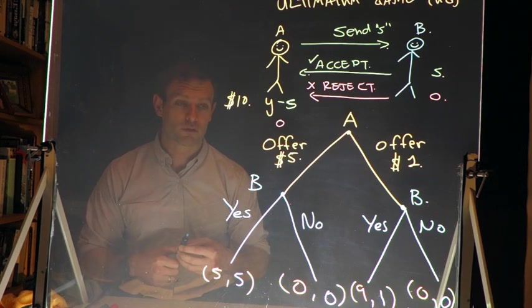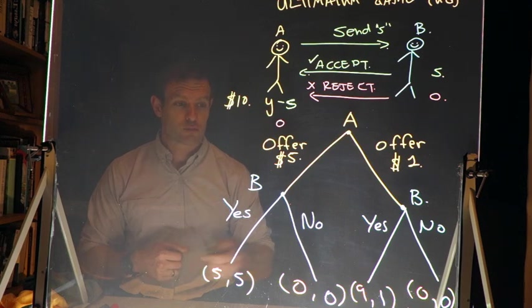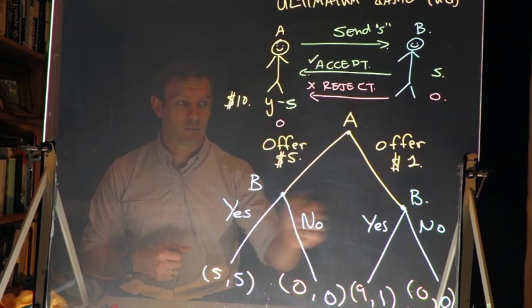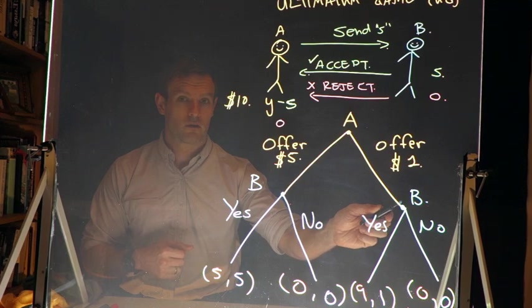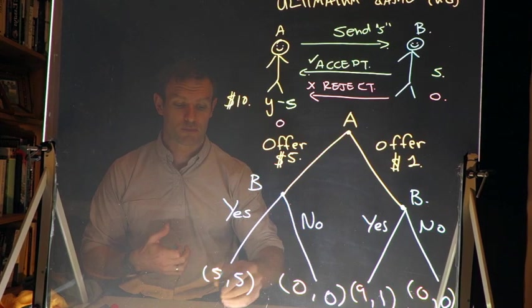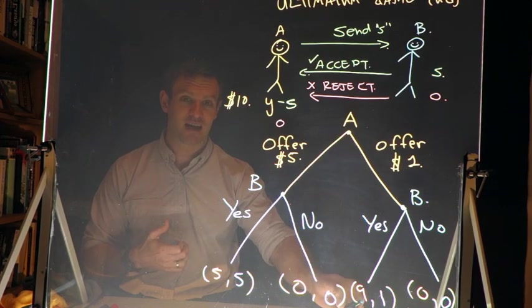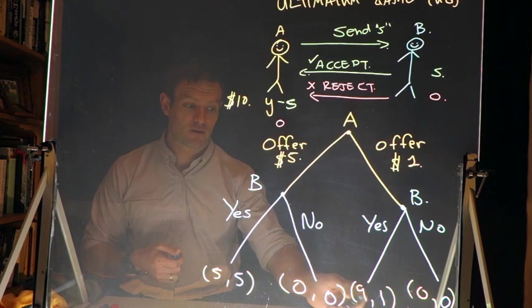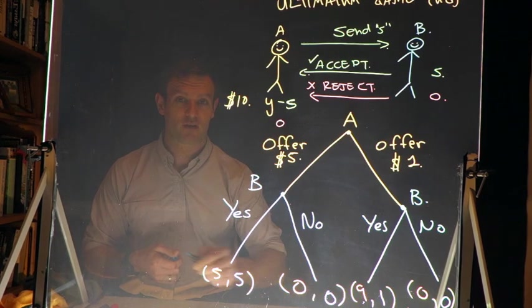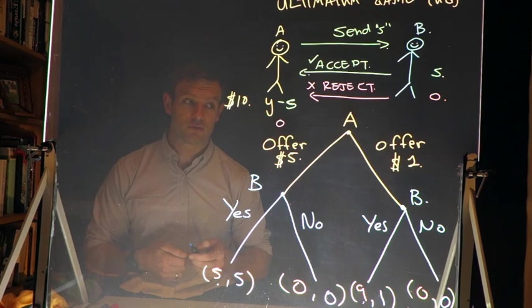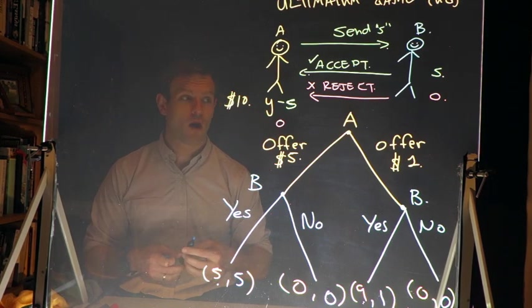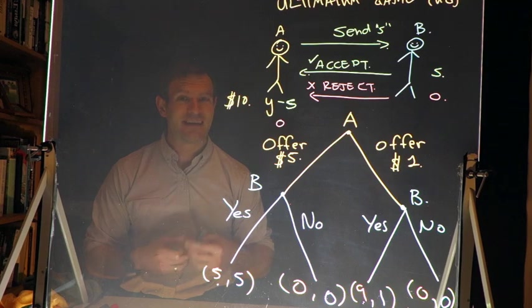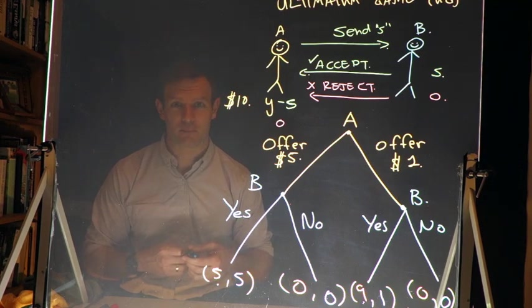A, knowing what B will do, then has to choose between making an offer of five dollars and making an offer of one dollar. A then has to choose between getting five dollars and nine dollars. What does A prefer? A prefers the nine dollars to the five dollars. What are they then going to do? They're going to then choose to offer one dollar to B in the expectation that B will accept that offer.